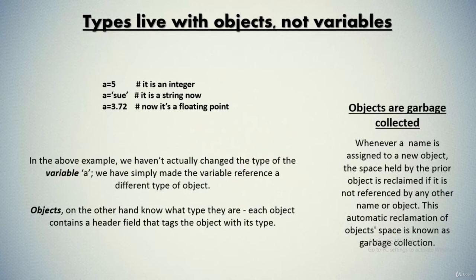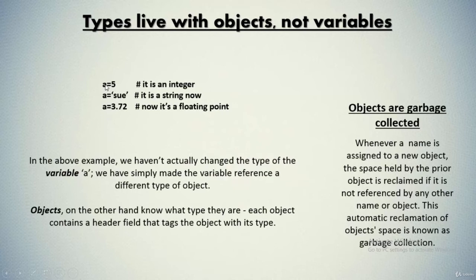Types live with the objects and not with the variables. The object created to reference a value contains the type of itself, while the variable does not carry a type. As you can see, a = 5 is an integer, a = 'cu' makes it a string, and a = 3.72 makes it a floating point value — all assigned to the same variable without changing the type of the variable 'a'. We are simply assigning the variable to different objects which have different types, and we haven't actually changed the type of the variable — we have simply made it reference a different type of object.